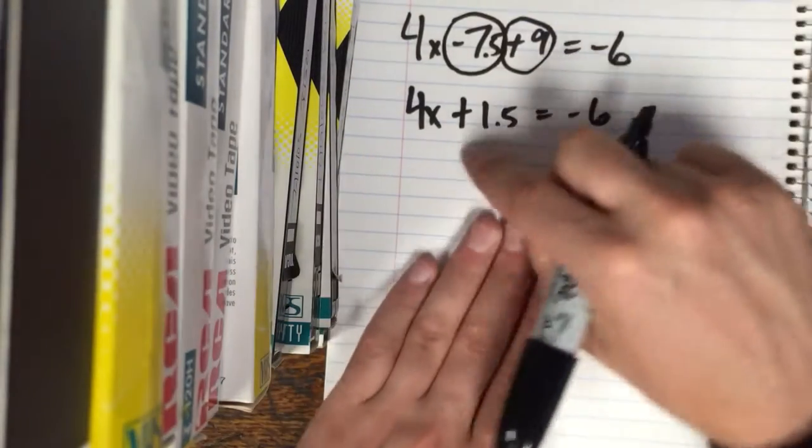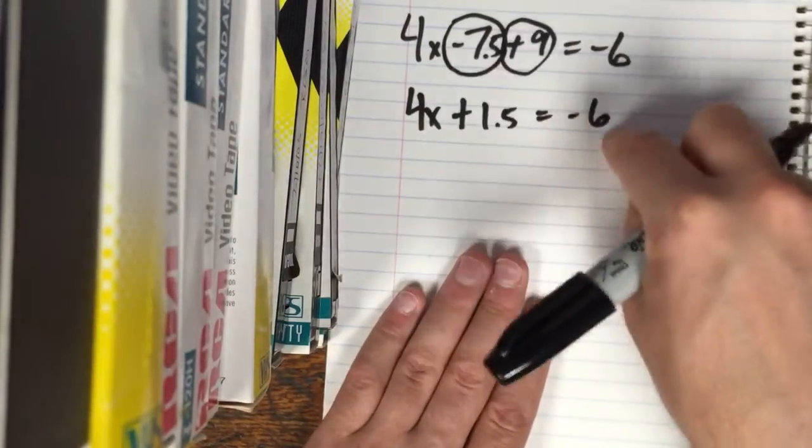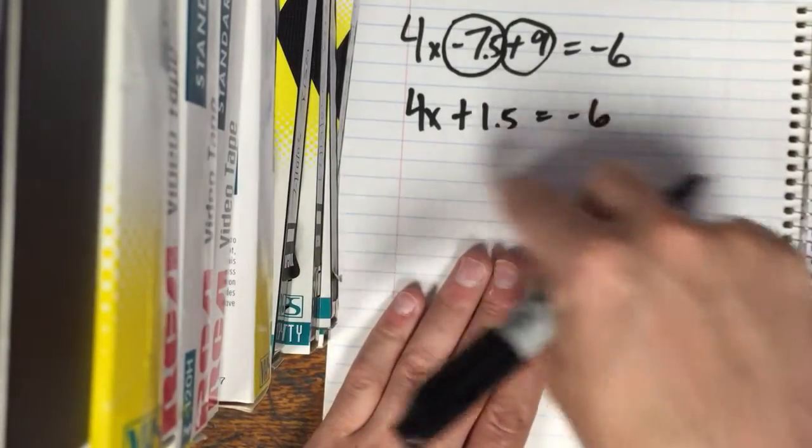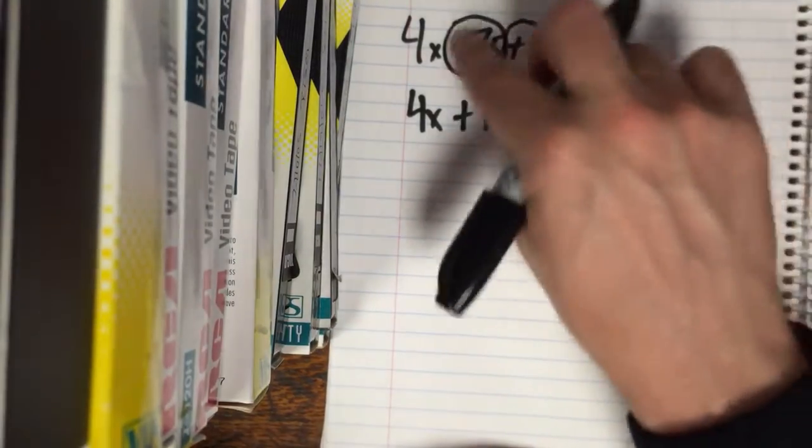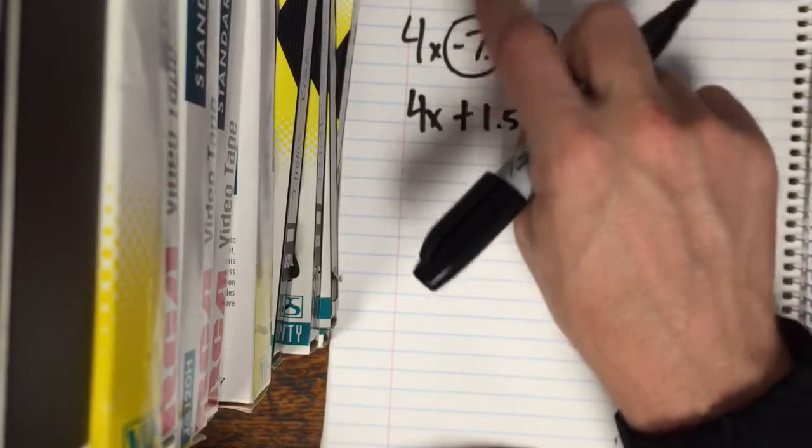Now we still got to get the X by itself but now that we've simplified all we can on each side now we got to go across the equal sign. To do that we do the opposites. Here we did regular. You know we just added 9 to that.